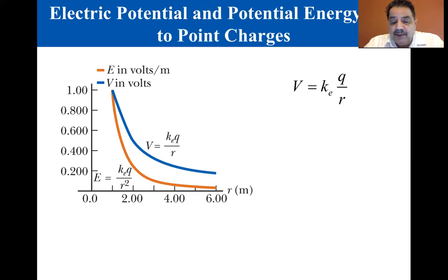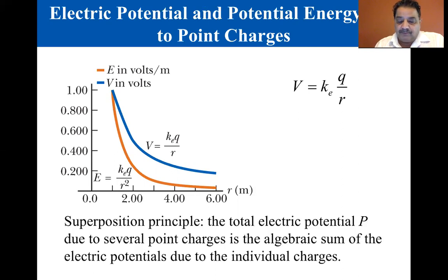The electric potential of two or more charges is obtained by applying the superposition principle. The total electric potential at some point P due to several point charges is the algebraic sum of the electric potentials due to the individual charges. Because electric potential is a scalar quantity, it's much easier to evaluate the electric potential at some point due to several charges than to evaluate the electric field, which is a vector quantity.